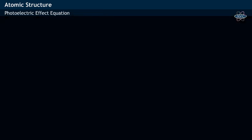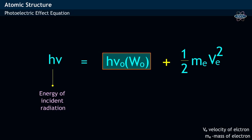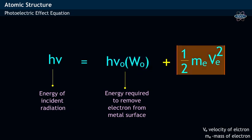Photoelectric effect is mathematically represented by equation h nu equivalent to sum of h nu0 or W0 and half mV squared. Here, h nu refers to the energy of incident radiation. Some portion is utilized to remove the electron from the metal surface, represented by h nu0 or W0, while remaining portion provides kinetic energy to photoelectron, represented by half mV squared.